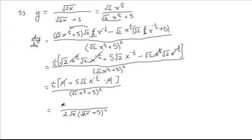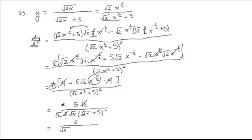What do I have left in the numerator? Well, those pieces got moved to the denominator, so the only thing left is the 5 times square root of 2. One other step of simplifying: square root of 2 over 2 is actually the same thing as 1 over radical 2 — where this is 2 to the 1 half and this is 2 to the 1, we subtract exponents and get 2 to the negative 1 half, which is 2 to the 1 half in the denominator. So these two combine into just square root of 2, and I can recombine that. The final answer is 5 over square root of 2x, times the quantity square root of 2x plus 5, squared.